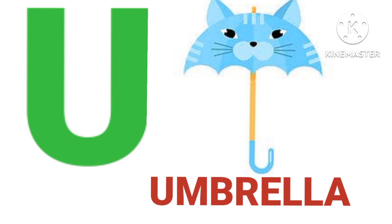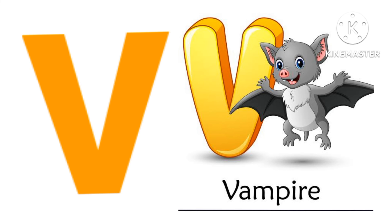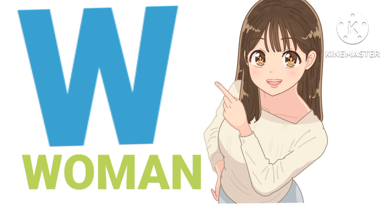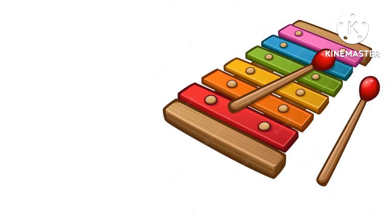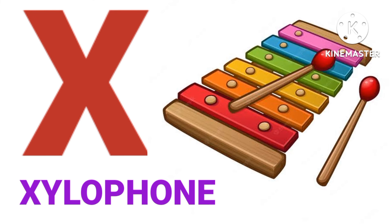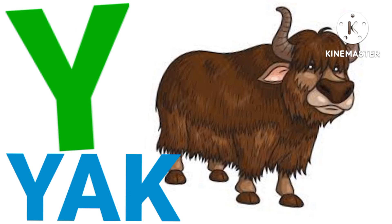U. U for umbrella. V. V for vampire. W. W for woman. X. X for jellyfish.